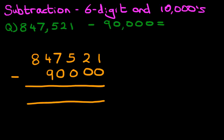And we're going to label the columns as well. We've got the units column, tens column, hundreds column, thousands column, ten-thousandths, and lastly, the hundred-thousandths.